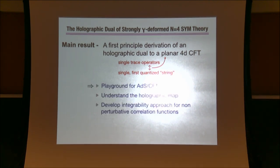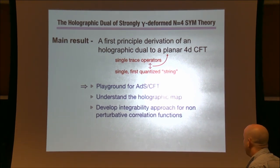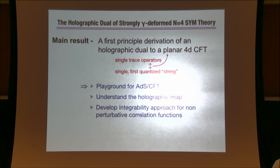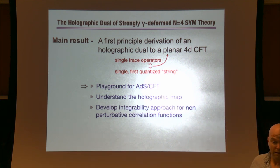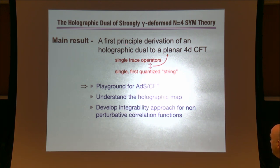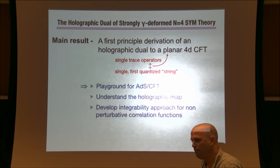What this is good for — I think this is a good playground for AdS/CFT. We'll have an explicit holographic map between the CFT degrees of freedom and the bulk degrees of freedom. One of our main motivations was to apply integrability tools for computing correlation functions in N=4. Doing such a thing — giving a first principle derivation of a holographic dual — is quite a new idea.